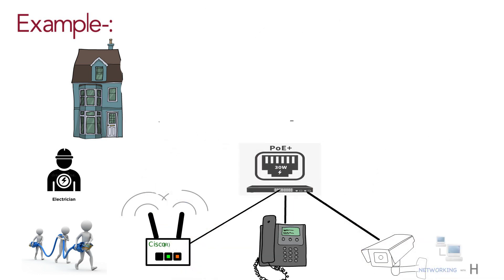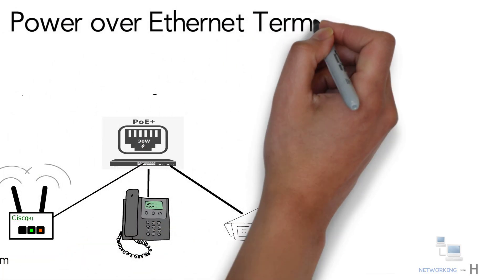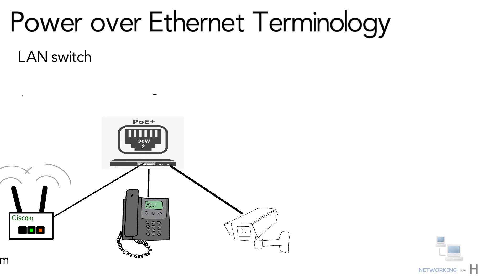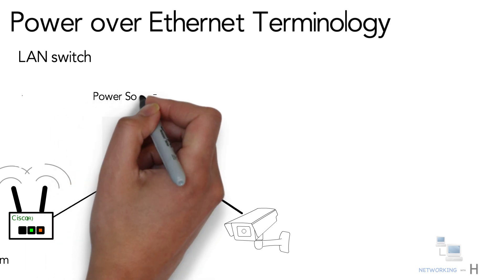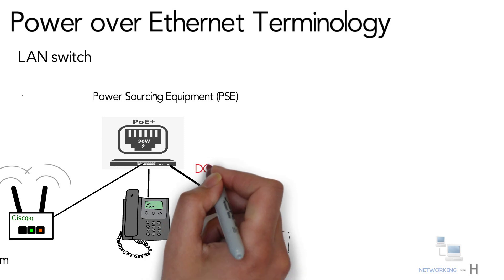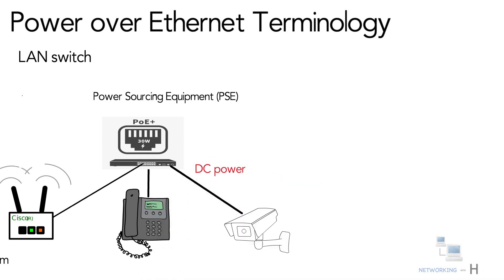Let's understand the terminologies used in PoE. With PoE, some device — typically a LAN switch — acts as Power Sourcing Equipment, also known as PSE. That is the device that supplies DC power over the Ethernet UTP cable. A device that has the capability to be powered over the Ethernet cable rather than by some other power connector is called a Powered Device, or PD.